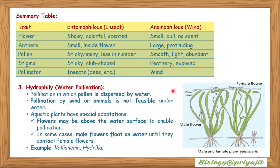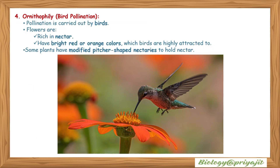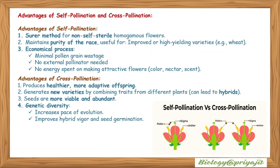Hydrophily — water pollination: pollen is dispersed by water in aquatic plants where wind or animal pollination is not feasible. Flowers may be above the water surface; in some cases, male flowers float on water until they contact female flowers. Examples: Vallisneria and Hydrilla. Ornithophily — bird pollination: flowers are rich in nectar and are bright red or orange to attract birds. Some plants have modified pitcher-shaped structures to hold nectar.